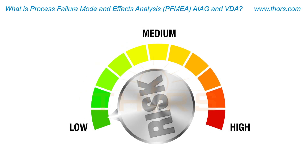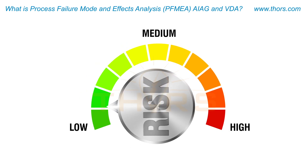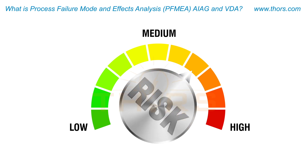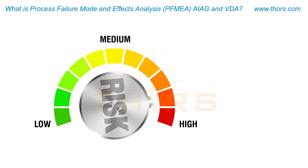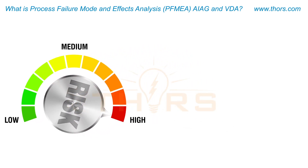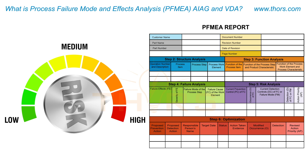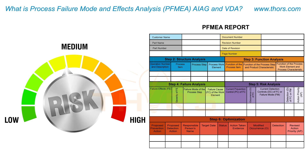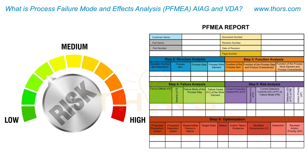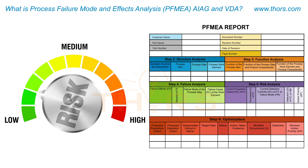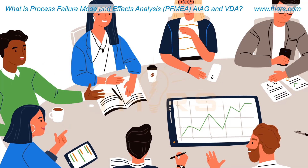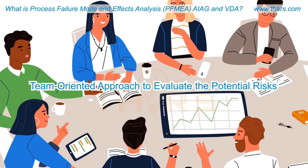PFMEA helps organizations to proactively identify risks during the product development stage. The early identification of risks helps organizations take preventive actions so that controls can be identified and established to eliminate or minimize the risk through technical actions.